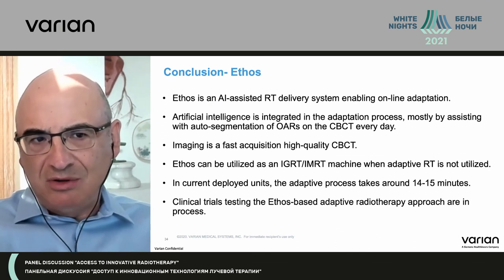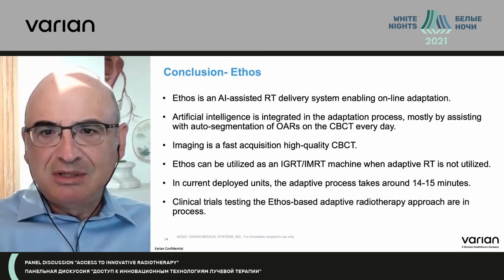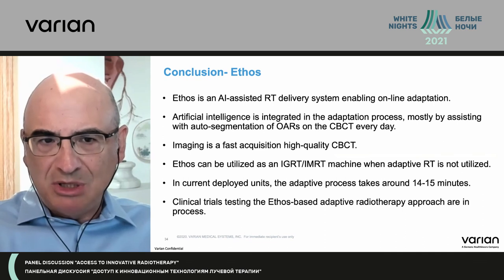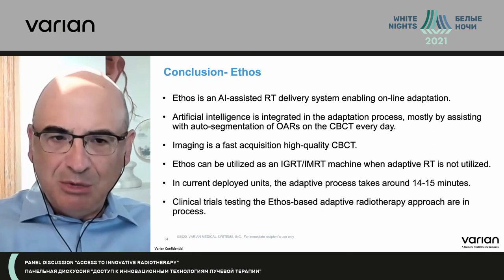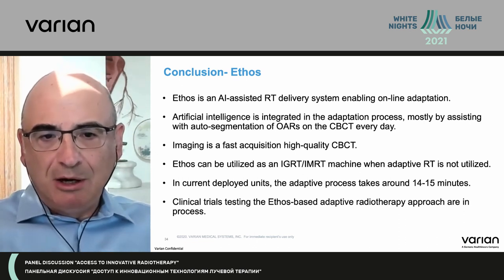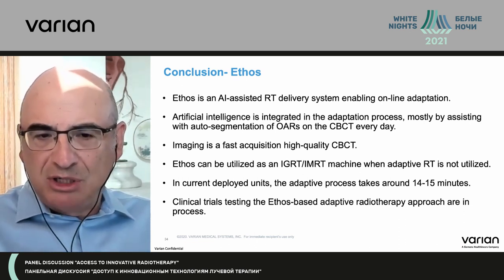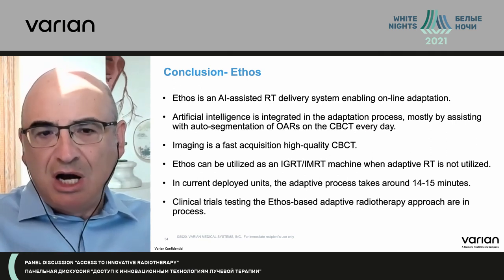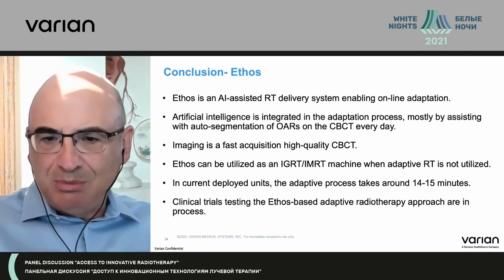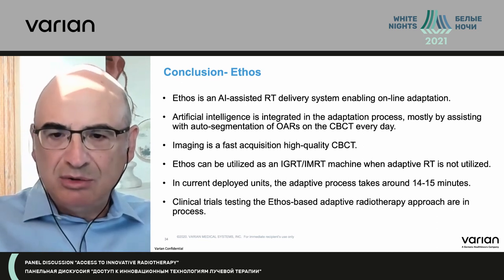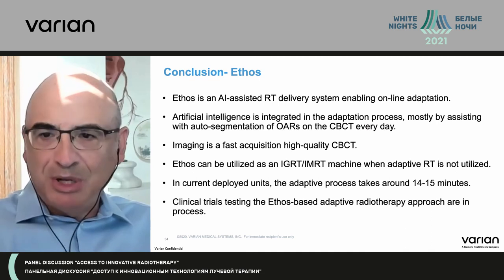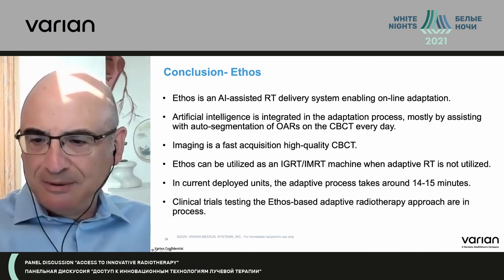In conclusion, Ethos is an artificial intelligence-assisted radiation therapy system enabling online adaptation. Artificial intelligence today is mostly assisting auto-segmentation of organs at risk and some planning, and the imaging is quite fast and will only go faster. If you're not doing adaptive, the unit will function almost like a Halcyon — a very efficient IGRT and IMRT machine that will not sit idle. Currently in the field with real users, the process is taking about 15 minutes, and we're waiting to get the results from the clinical trials. Thank you.